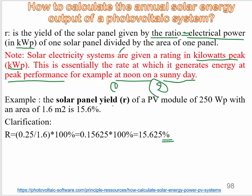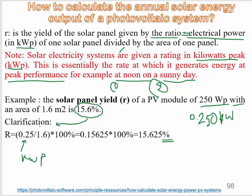Here we have an example: the solar panel yield R of a PV module of 250 watt peak. Be careful — this is not in kilowatt, so we change it to 0.250 kWp, with an area of 1.6 square meters. The calculation is R equals 0.25 divided by 1.6, multiplied by 100%, giving a result of 15.625%, approximately 15.6%.